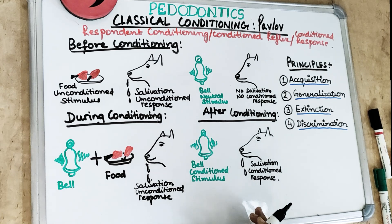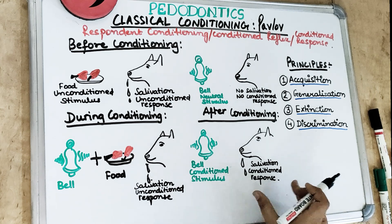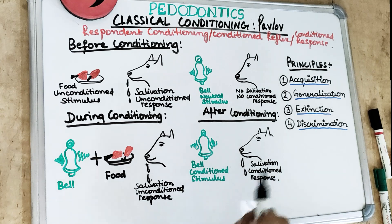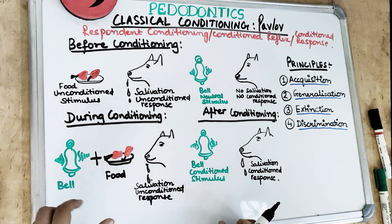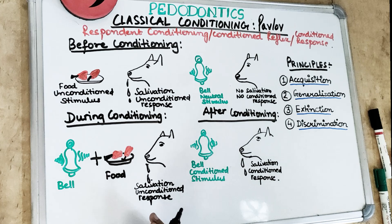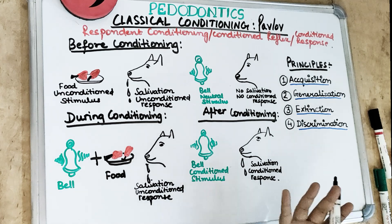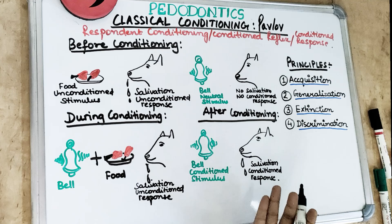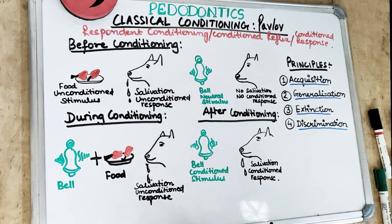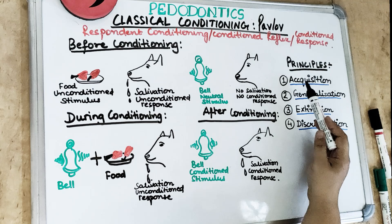After conditioning, the conditioned bell stimulus produces the conditioned response. After ringing the bell for a few days before serving food, Pavlov noticed that after ringing the bell, the dog was salivating to the same extent as he was salivating to the food — to the unconditioned stimulus.